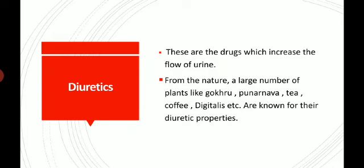From nature, a large number of plants like Gokuru, Punarnava, tea, coffee, digitalis, etc. are known for their diuretic properties. What is diuretics? It is the drug that increases the urine flow. These are some examples and we will discuss their diuretic properties.